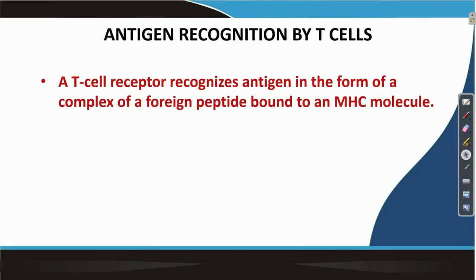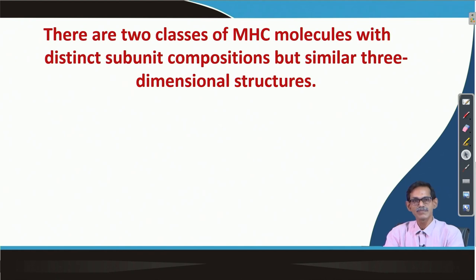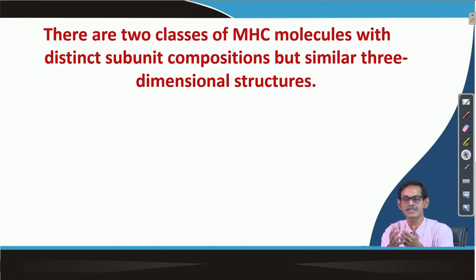T cell receptor recognizes antigen in the form of a complex — a foreign peptide which is bound to MHC. So it is only when bound to MHC that it is going to be recognized by T cell. There are two classes of MHC molecule, and they have very distinct subunit composition, but their three-dimensional structures are very similar looking.